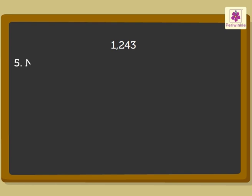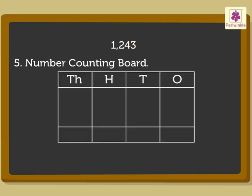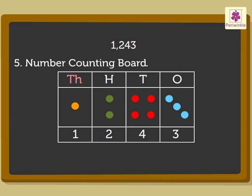Fifth, finally, it can be shown with the help of coloured counters. Use three blue counters to show three ones. Use four red counters to show four tens. Use two green counters to show two hundreds. Use one yellow counter to show one thousand.